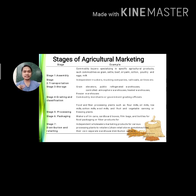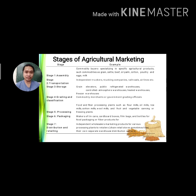Stage six is packaging. Packaging can involve tin cans, cardboard boxes, film bags, and bottles for food packaging, or fiber products for other packaging depending on the product being packaged.